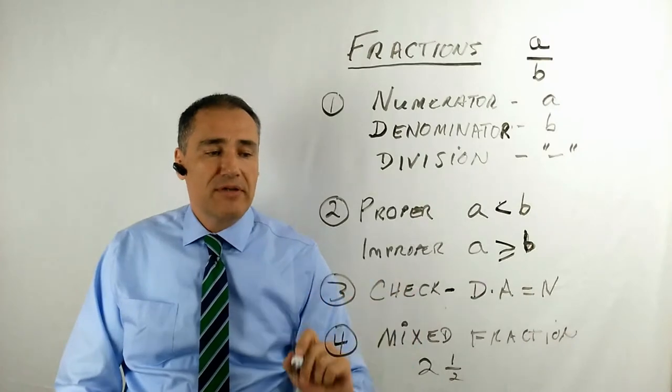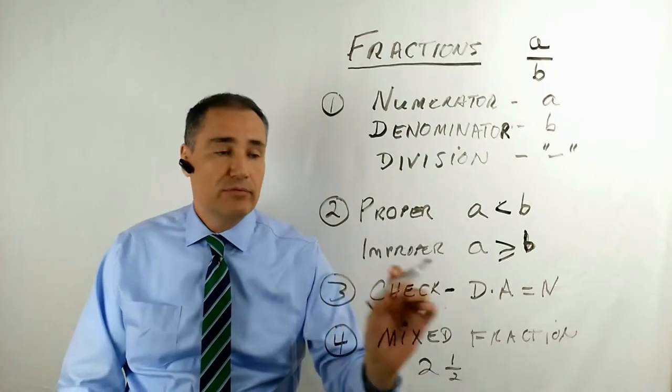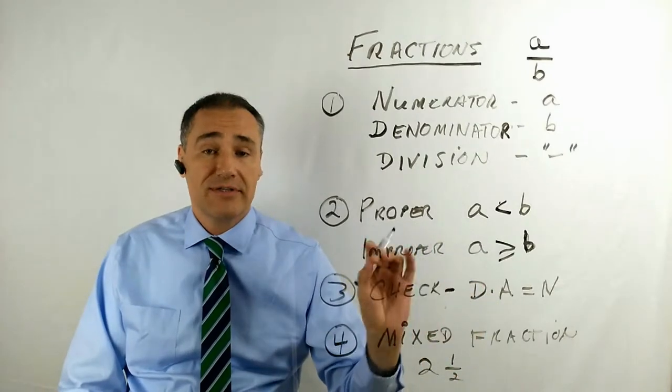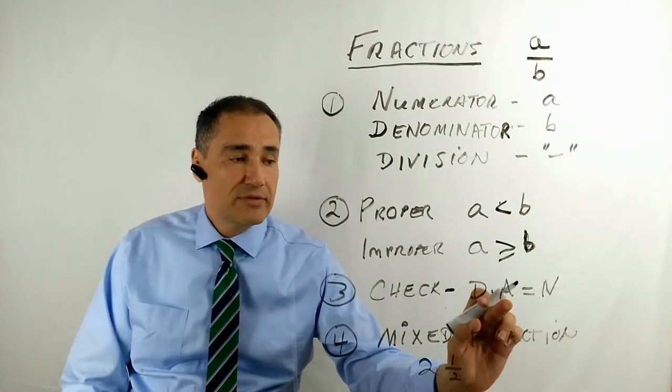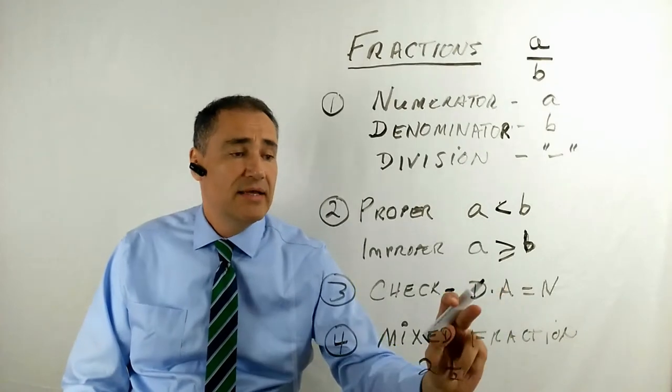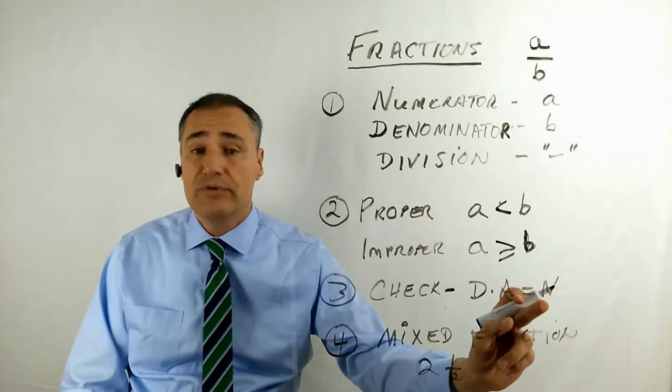Now three, I just want to bring this up because how do you check if your answer is right? And this is really important. It's a quick way to see if you're going to get the right answer on a test or exam. Check this out. The denominator multiplied by your answer has to equal your numerator. The denominator multiplied by your answer has to be equal to the numerator.